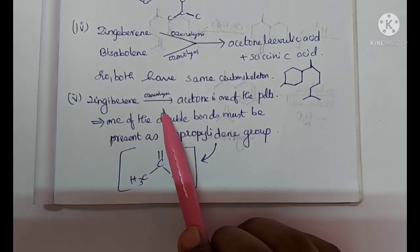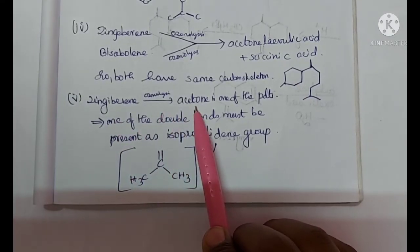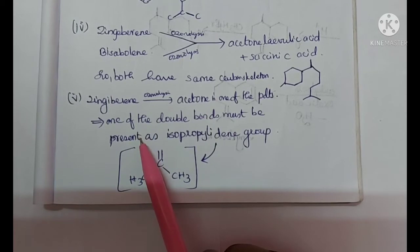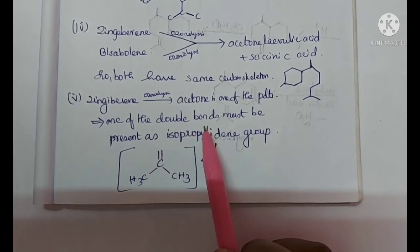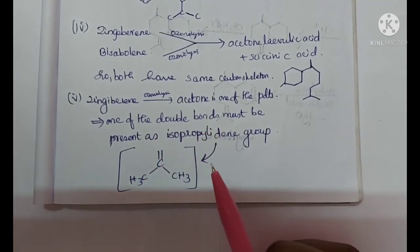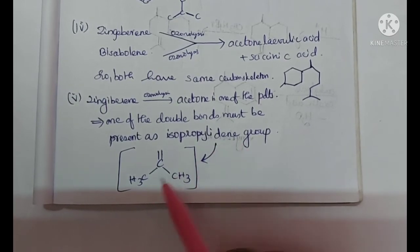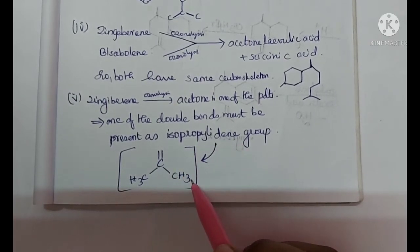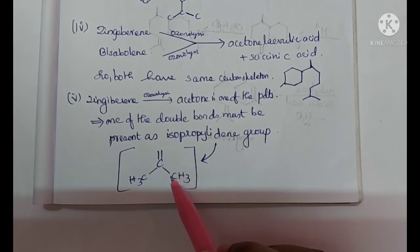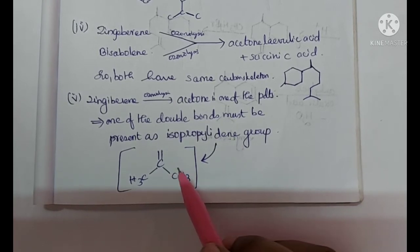Zingiberine on ozonolysis gives acetone as one of the products. So one of the double bonds in Zingiberine must be present as isopropylidene group. That is, this is the isopropylidene group, as you can see CH3-C double bond and CH3. So this shows that one of the double bonds in Zingiberine is present as isopropylidene group.